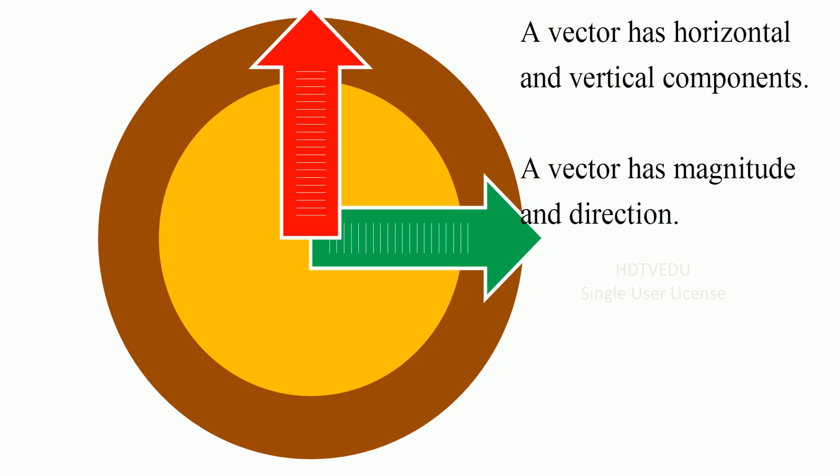We know that a vector has horizontal and vertical components. A vector has magnitude and direction. So for a vector to change, you can change magnitude, you can change direction, or you can change both magnitude and direction.